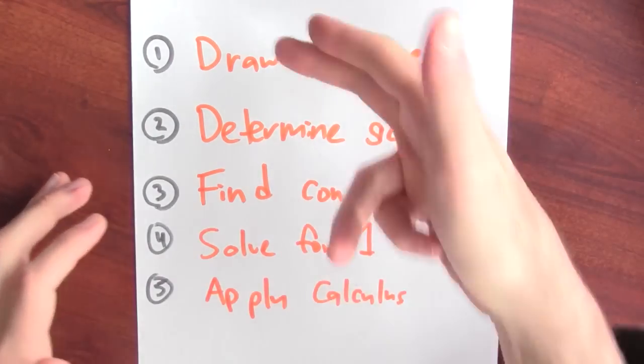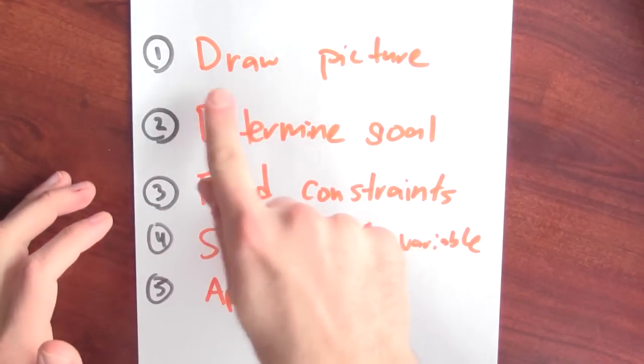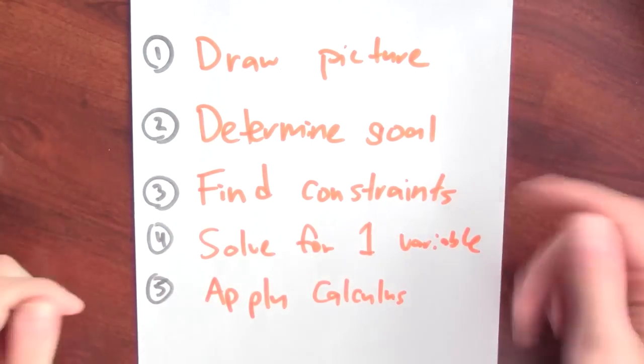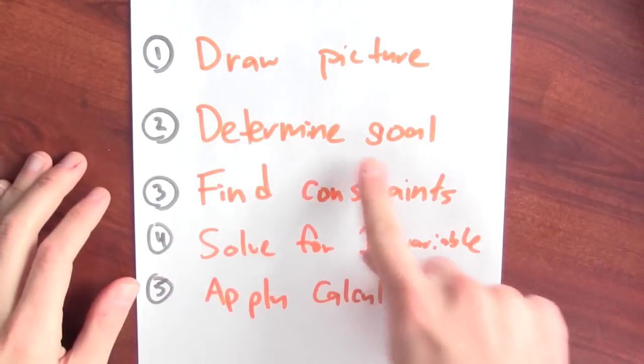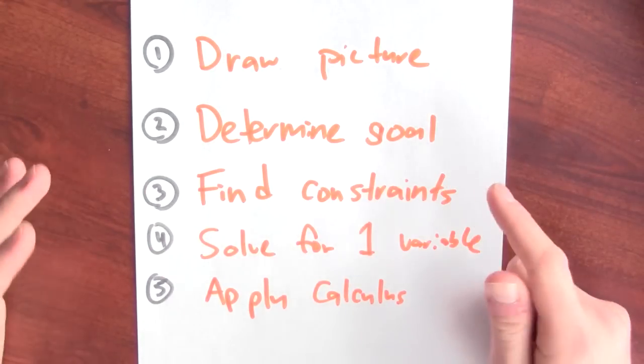So how big of a sheep pen can you build with that much fencing? The process is a standard one. It's got five steps. First thing I'm going to do is draw a picture of the situation.